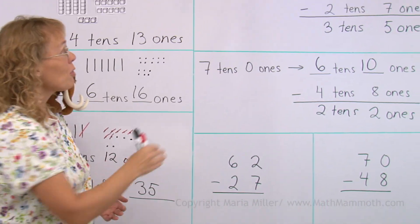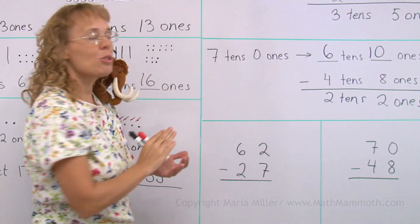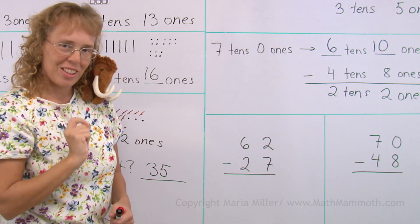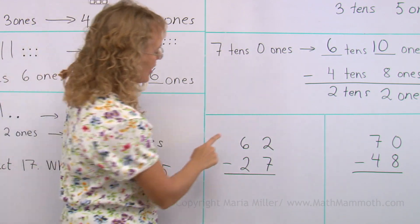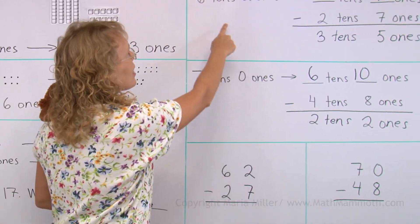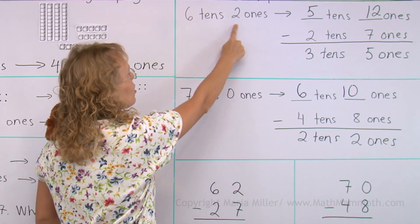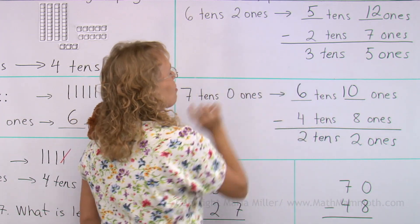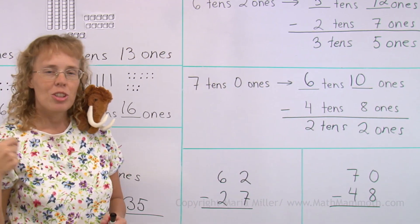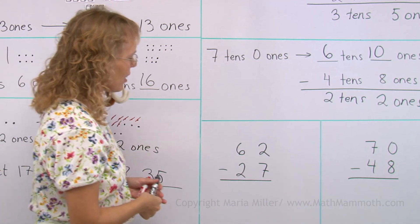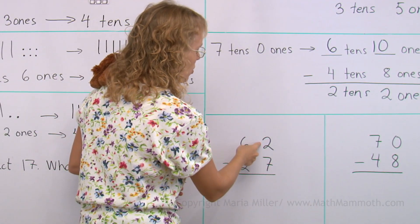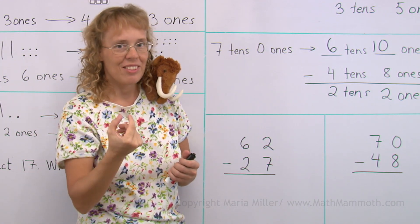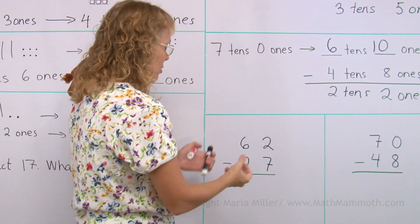Lastly, I want to show you these two problems, these two subtraction problems, as they're usually done when we write the numbers under each other. Sixty-two minus twenty-seven. It's the same problem as here. Six tens, two ones, and then take away two tens, seven ones. We already know the answer. It's going to be thirty-five. But I'll show you how it's written, how it's usually done. We think here that two minus seven, I cannot do it. From two ones, I cannot take away seven ones. So I will regroup.